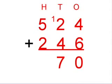Finally you add the two numbers in the hundreds column, which are 5 and 2, which equals 7. So 524 plus 246 equals 770.